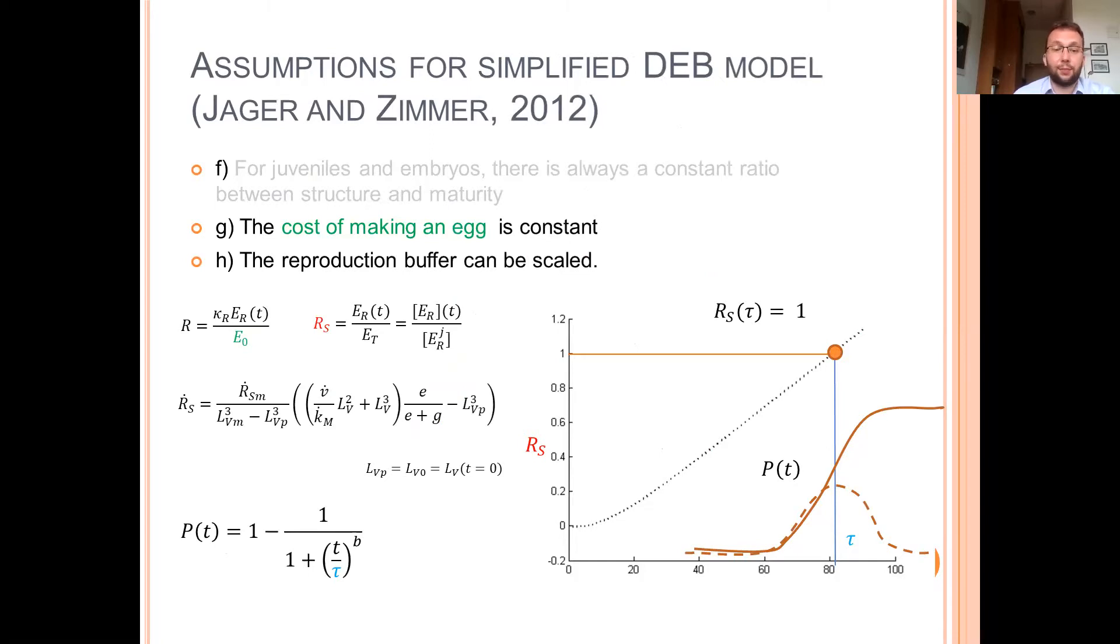The cost of making an egg is constant. And we assume that the number of eggs produced in the future is also constant. And therefore, there is also some constant value of reproduction buffer which is a trigger for pupation. So when this value is reached, the pupation occurs.